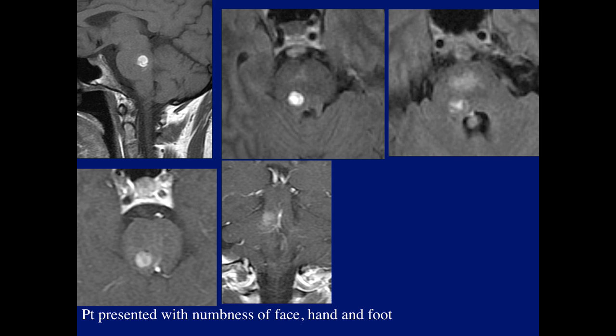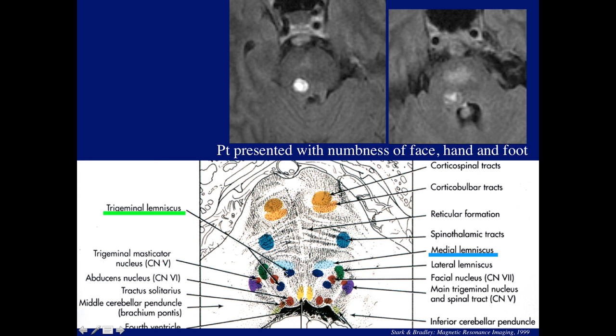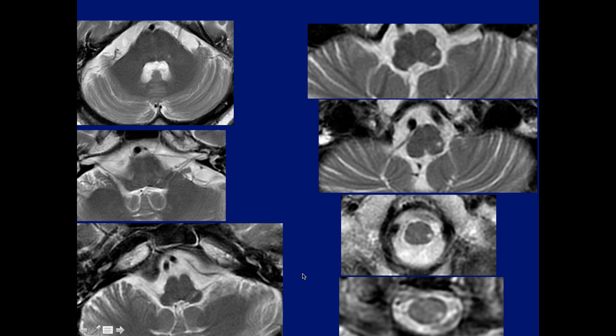Here's a patient who had a cavernoma that bled in the pons. The patient presented with numbness of face, hand, and foot symptoms. Everything can be tied together if we understand that the medial lemniscus and the trigeminal lemniscus are close together — as seen here: medial lemniscus, trigeminal lemniscus.